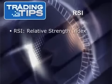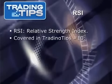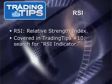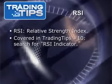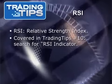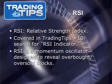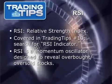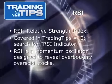Let's have a brief recap of RSI, or Relative Strength Index. We covered RSI in episode number 10 of the TradingTips.com video newsletter. You can find it by searching 'RSI indicator' on TradingTips.com. Basically, RSI is a momentum oscillator that uses moving averages on up days and down days — days when the stock is up or down — to determine whether a stock is overbought or oversold.